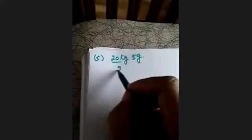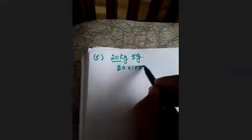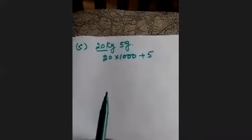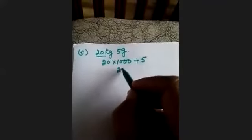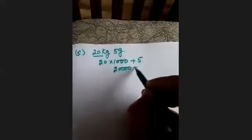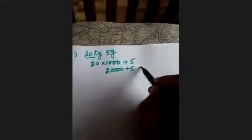Part C is 20 kg and 5 grams. Convert 20 kg into grams: 20 × 1000 + 5 = 20,000 + 5 = 20,005 grams.